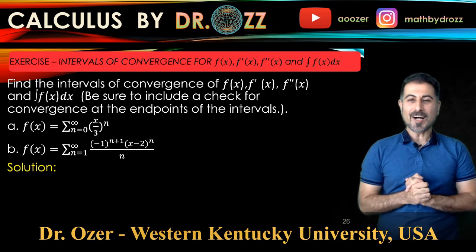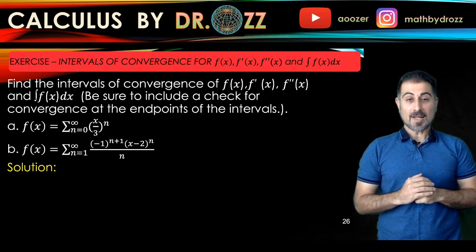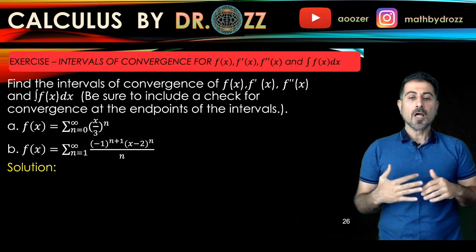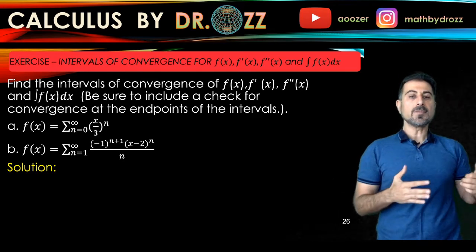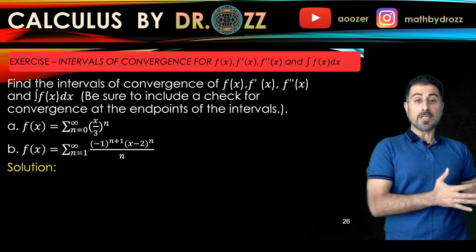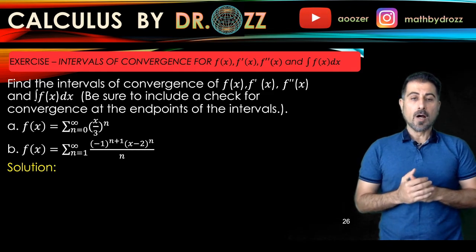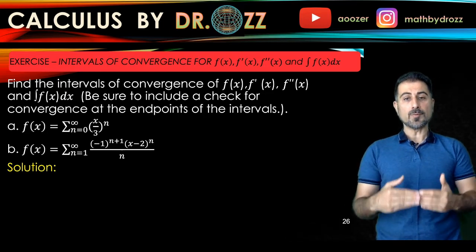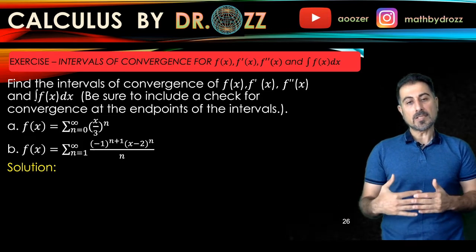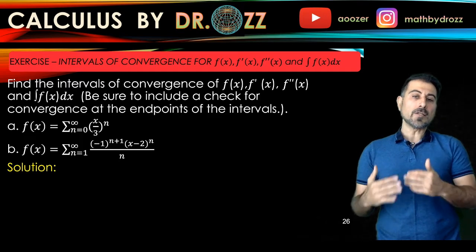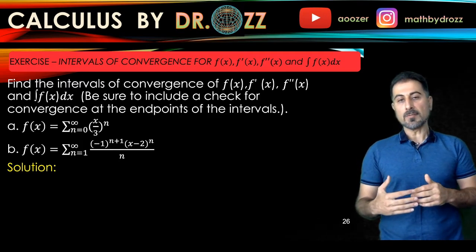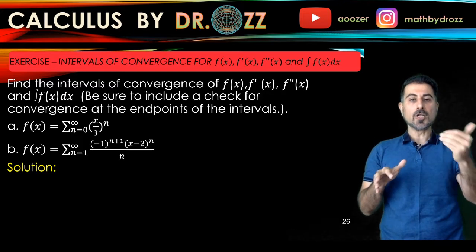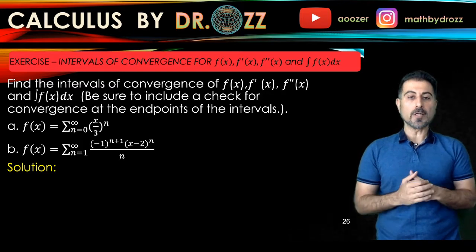Hello, welcome back. This is Calculus by Dr. Oz. Today we're going to practice power series with a different application. When you have a power series for a given function, you can reproduce power series of the derivatives and anti-derivatives of the function using term-by-term differentiation or integration. The interval of convergence stays the same except possibly at the endpoints, so analyzing those endpoints is the core of what we'll do.